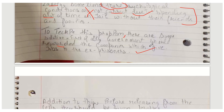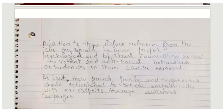I would say a better approach is that they should be given proper education and proper treatment so that when they come out, the repetition does not happen. But what you have written — that companies should be appreciated or rewarded for those who committed smaller crimes, served less time, and showed good behavior — that can be mentioned. In addition to this, before releasing from the cells, they should be given proper psychological and spiritual counseling so that violent and anti-social behavior and tendencies in them can be removed.